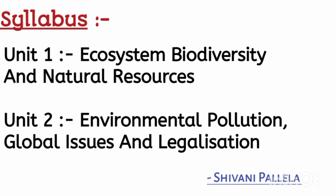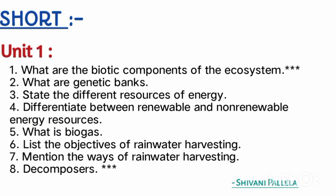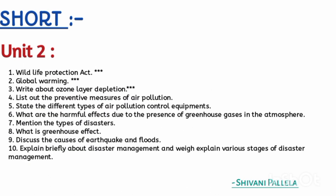For Unit One short questions, I have given eight questions. The most important ones are: Decomposers, Biotic Components of Ecosystem, Rainwater Harvesting, and Biogas. For the short answer, one side of the answer booklet is more than enough. These are topics you have already learned at schooling level in science.